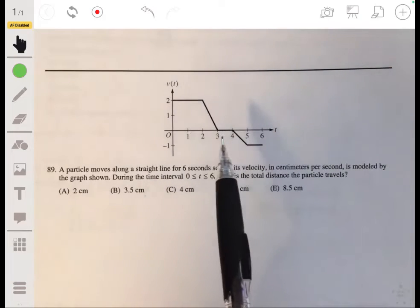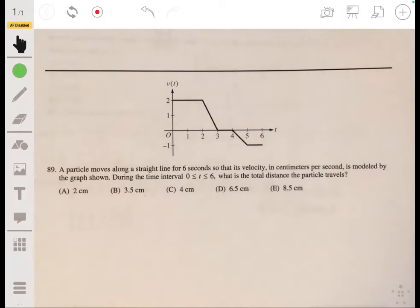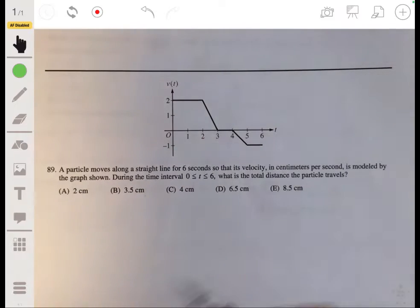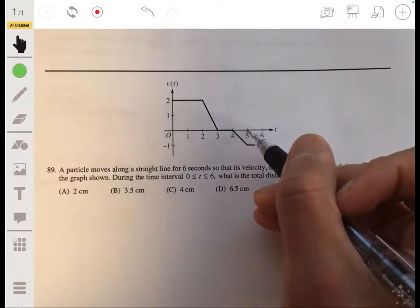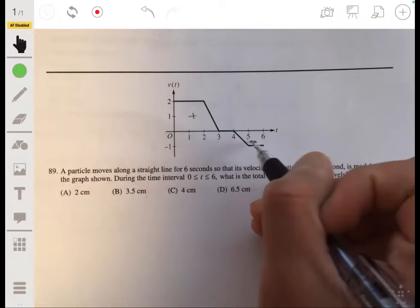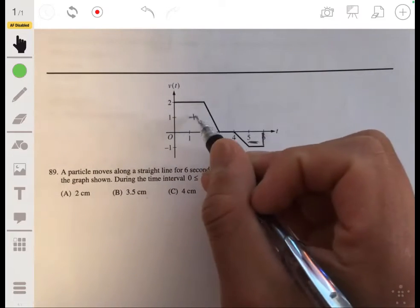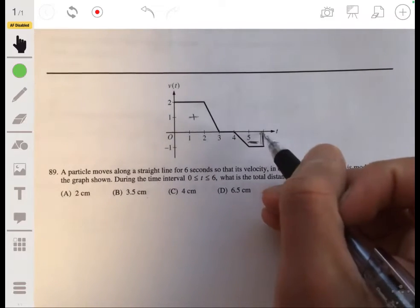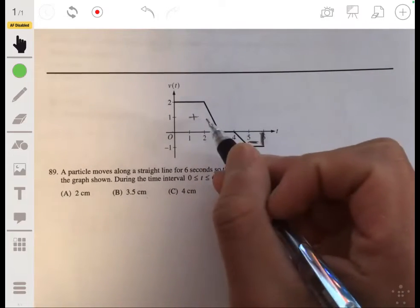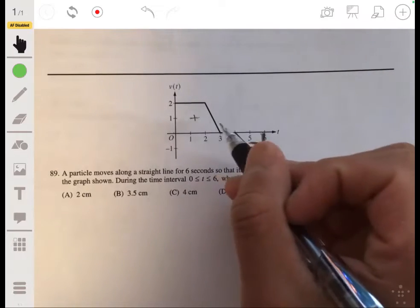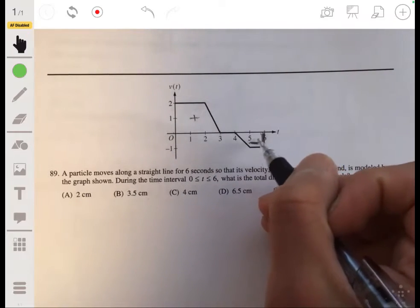Okay, so this models velocity. I believe what they're going to be getting at here is so you recognize that when you integrate velocity, you'll get displacement. So in order to find distance, whenever you have a negative velocity, you need to make sure you treat it as a positive quantity.